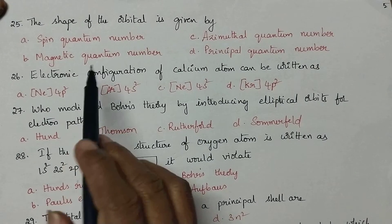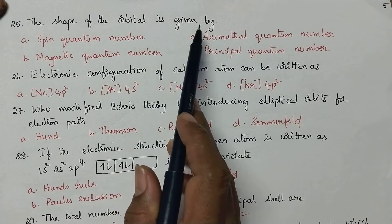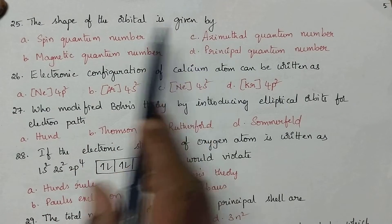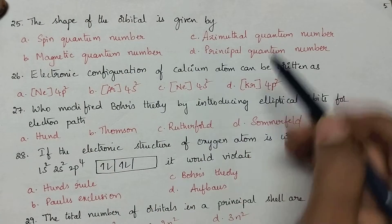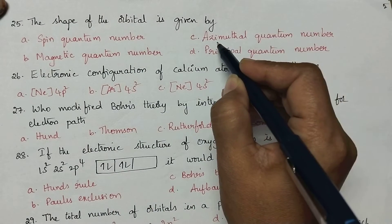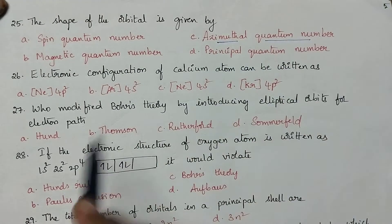The shape of the orbital is given by: the shape of the orbital is explained by the azimuthal quantum number.